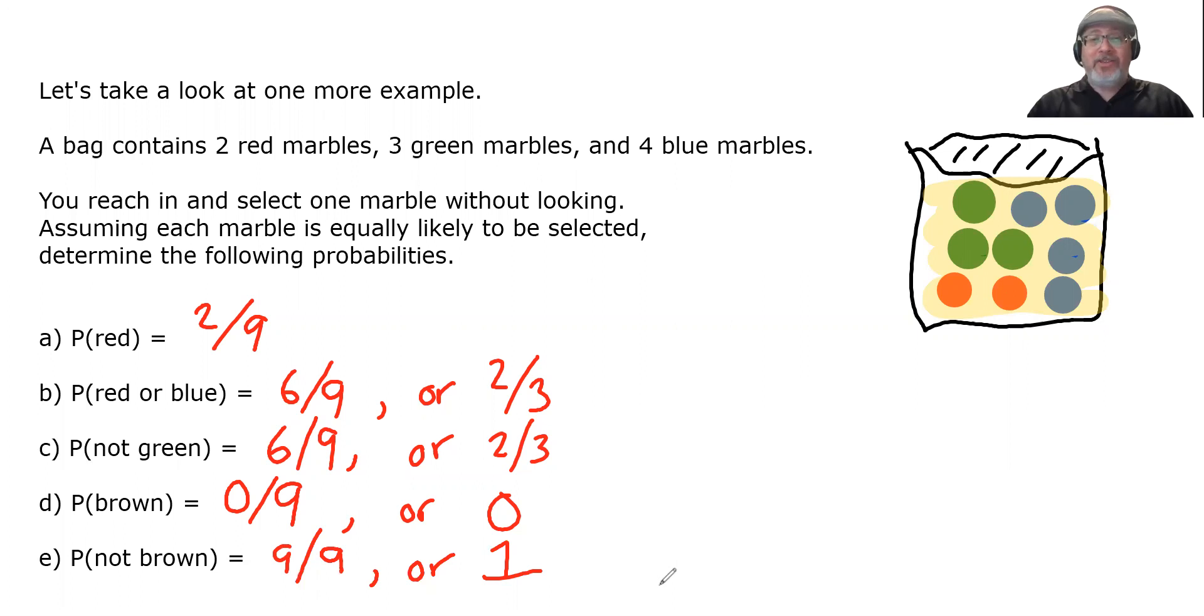All right, so in the next video, we're going to talk about a different type of probability called empirical probability. And we will relate the two types of probability, theoretical and empirical.